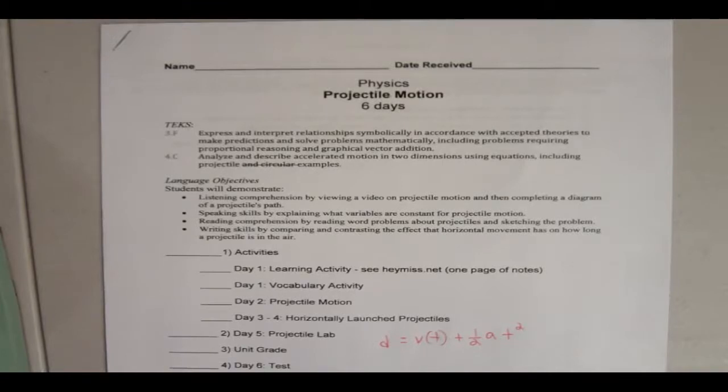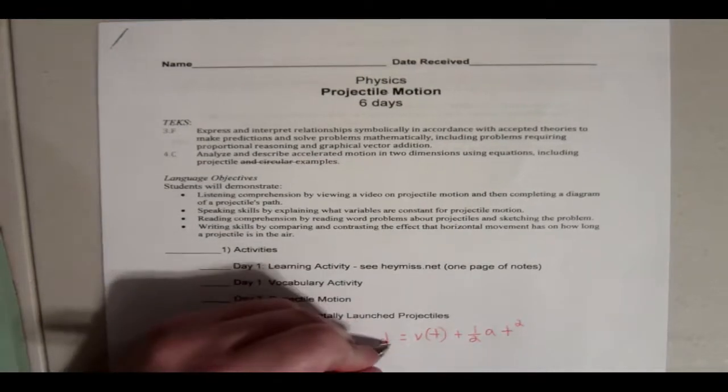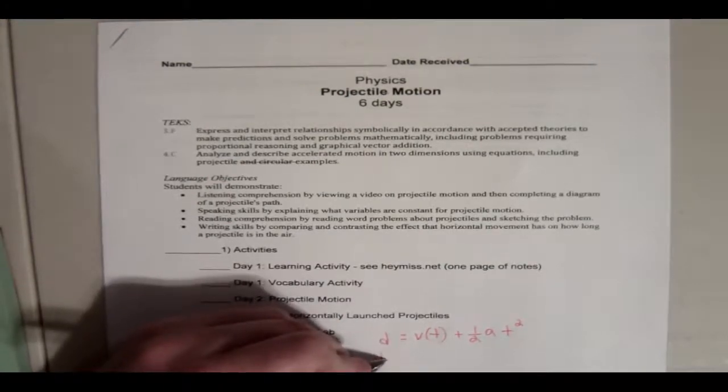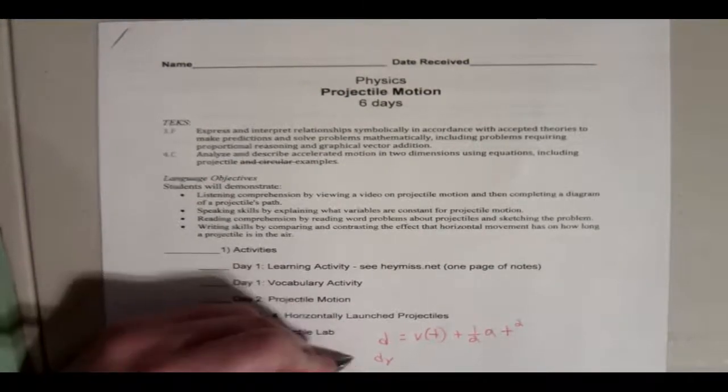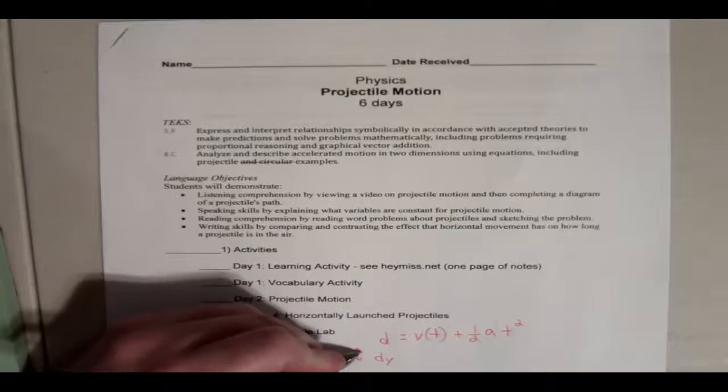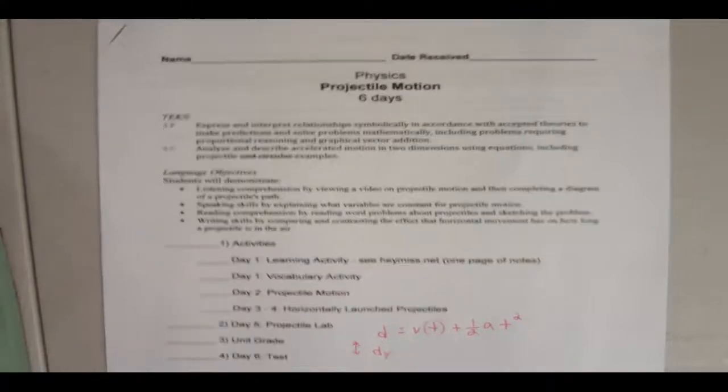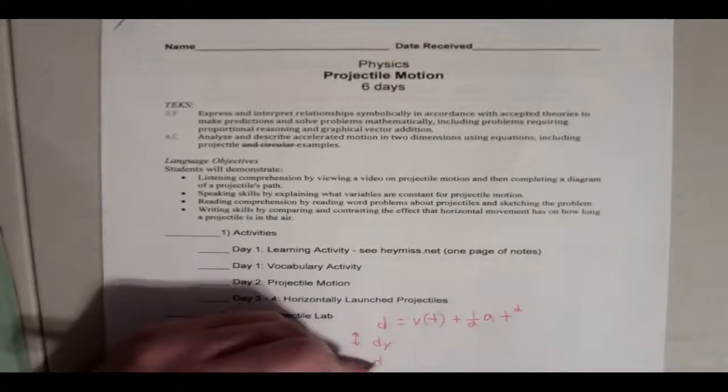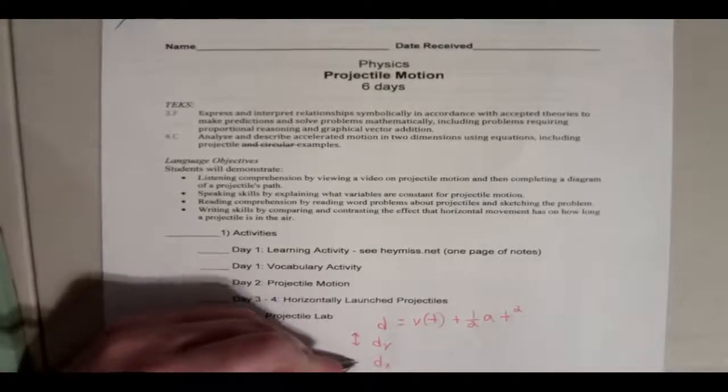We're going to go in a little more detail the next video as we get closer into the unit. This is the formula you're using the whole time. The only difference is sometimes you're going to find the displacement of y, which is up and down, like y-intercept. And sometimes you're going to find the displacement of x, which is left and right.